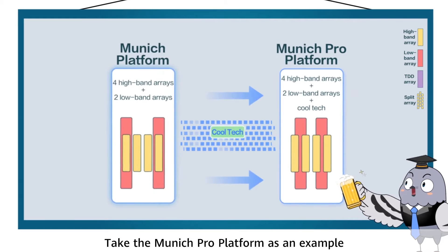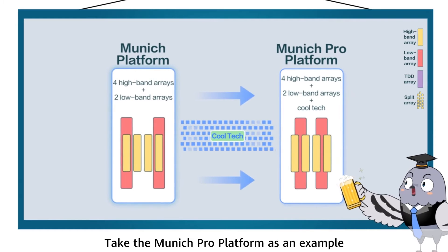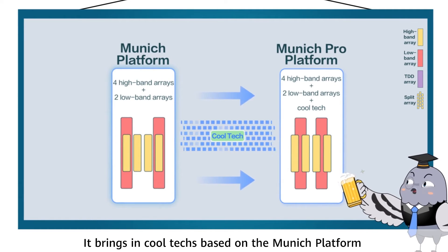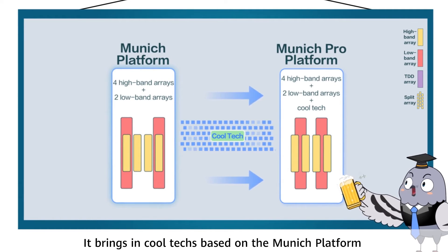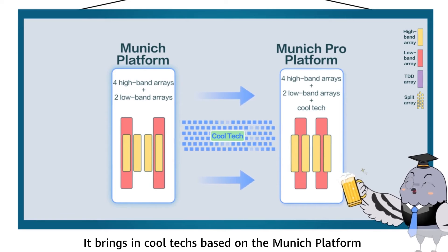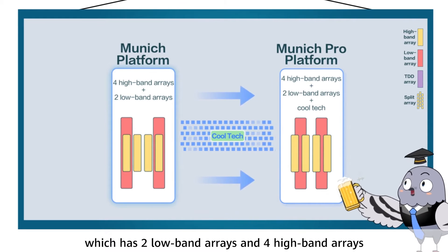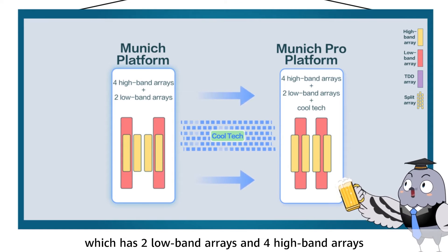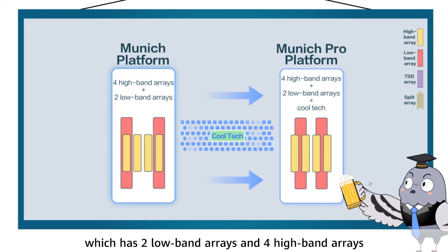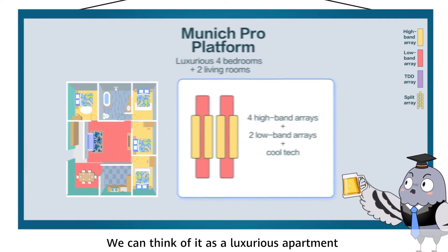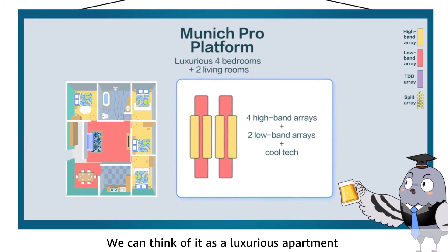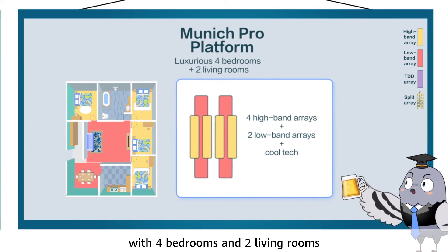Take the Munich Pro platform as an example. It brings in cool techs based on the Munich platform, which has two low band arrays and four high band arrays. We can think of it as a luxury apartment with four bedrooms and two living rooms.